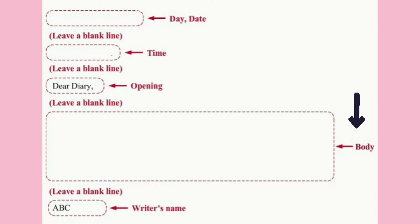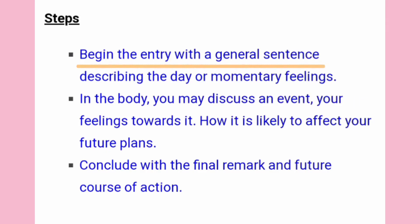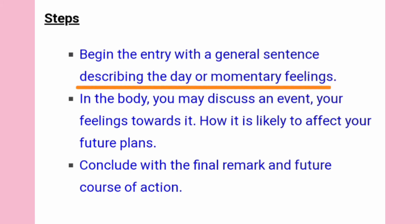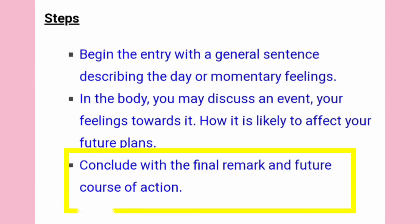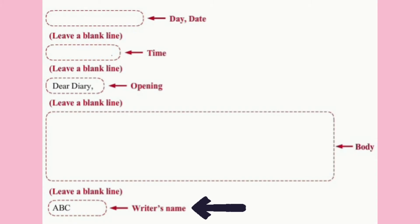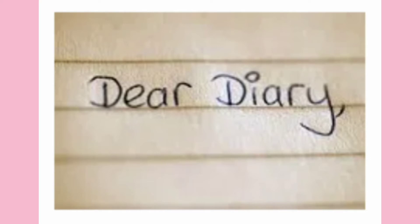When we are writing the body of the diary entry, we should take care of the following points. We should always begin the entry with a general sentence describing the day or momentary feelings. In the body, we may discuss an event, our feelings towards it, and how it is likely to affect our future plans. To end the diary entry, the person writing needs to either sign it at the bottom or write their first name.